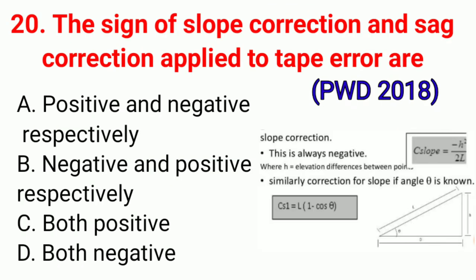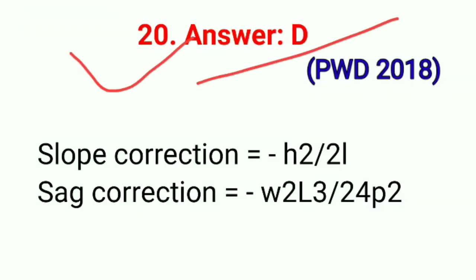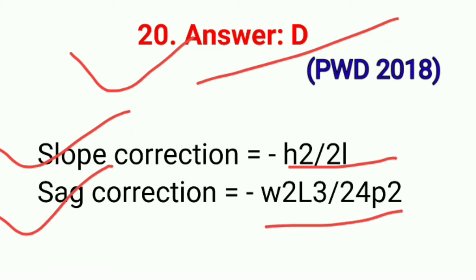Question No. 20. The sign of slope correction and sag correction applied to tape — correct option D: Both negative. In the formula, slope correction = −S²/(2L) and sag correction = −W²L³/(24P²). Correct option D.